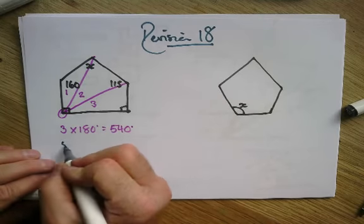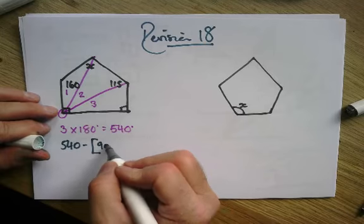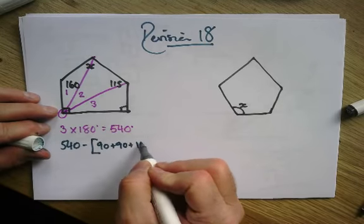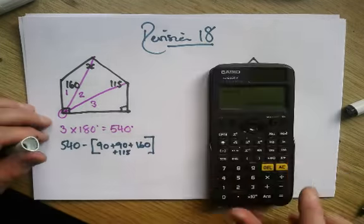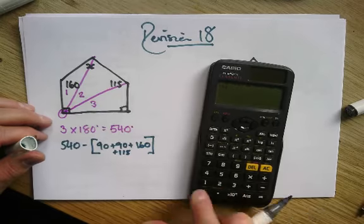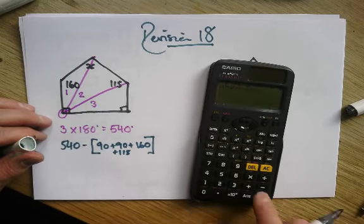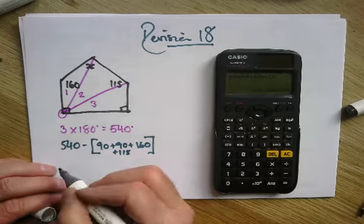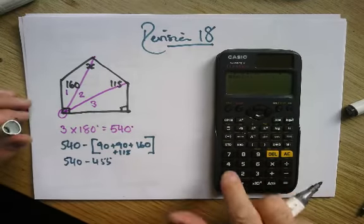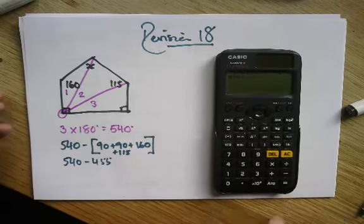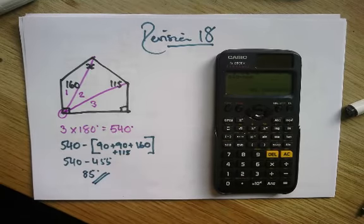So in this pentagon all the angles add up to 540 degrees. And I simply then do, 540 and I take away the sum of all of these. So that's the 90 plus the 90 plus 160 plus 115. So I just add all those together. So it's the 90 plus the 90 plus the 90 plus the 160 plus the 115. That equals 455. So I then say, well 540 minus my answer equals 85 degrees. And there we go.